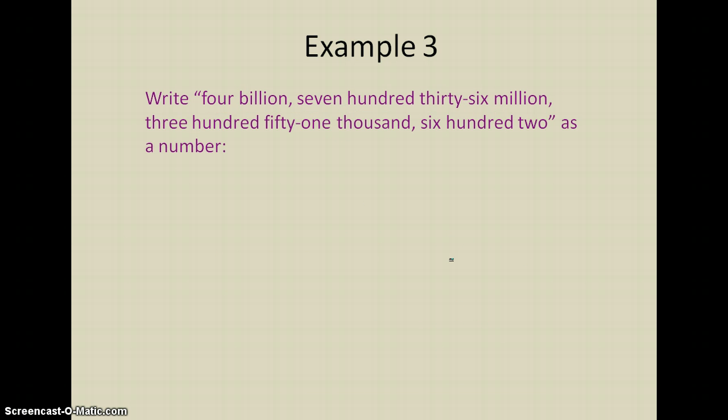All right. One more example. This is going to be a really big one. And I'm going to do it without a place value chart. So this time I'm writing four billion seven hundred thirty-six million three hundred fifty-one thousand six hundred two as a number. So I'm going to go through here. I'm going to look for all those period names. So billion is one of them. Million is another one. Thousand is another one. And then that pretty much brings me to the end.